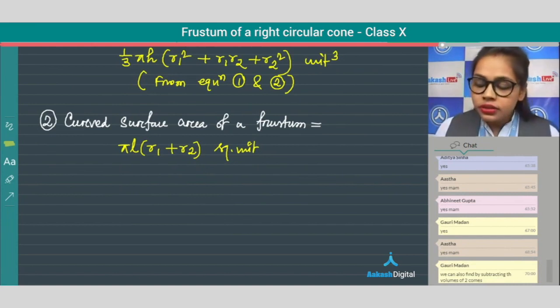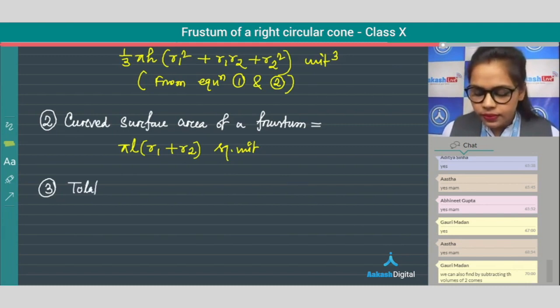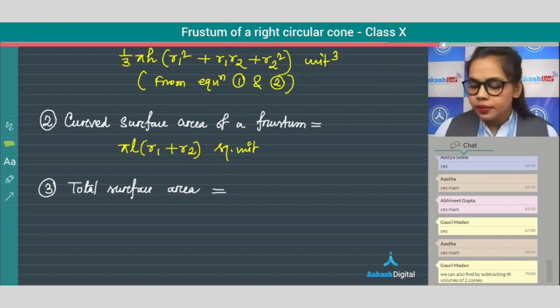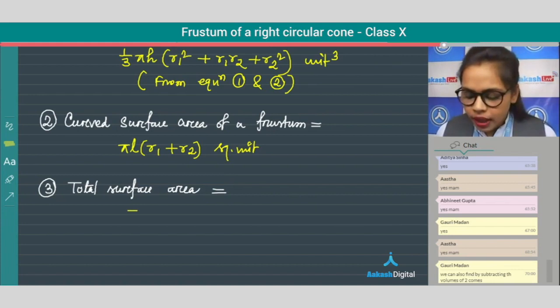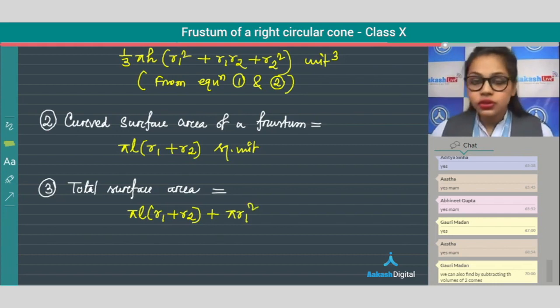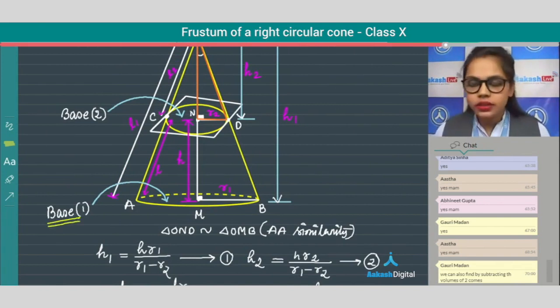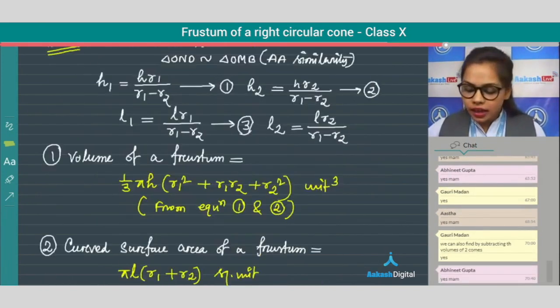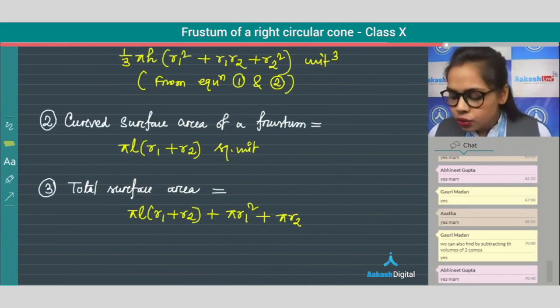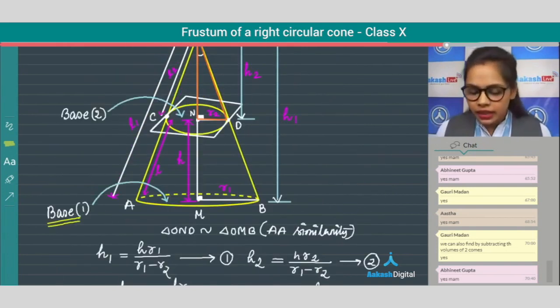Now the third one we will write down is the total surface area. We can write down this as pi l in a bracket r1 plus r2, plus what we will write down is pi r1 square, which is the area of base 1, can you see that? Area of this base 1, and we'll write down plus pi r2 square, which is the area of base 2. So we got the formula that is total surface area square unit.